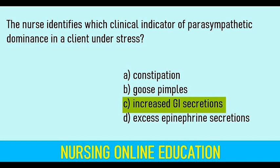Constipation, goose pimples, and epinephrine secretion are all sympathetic nervous system actions. If the answer relates to parasympathetic nervous system dominance, the manifestation is increased GI secretions — leading to diarrhea. Increased GI secretion is the correct answer.